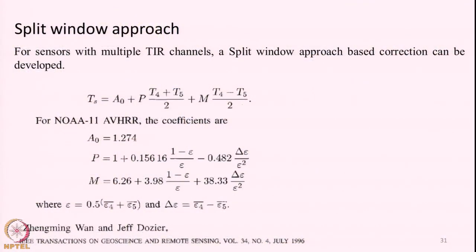This applies to sensors with one thermal channel — hence the name single channel method or radiative transfer equation approach. For sensors with two or more thermal channels — for example, Landsat 8 has two thermal channels, band 10 and band 11 — and sensors like MODIS with two thermal channels, we can resort to a method known as the split window technique. In the split window method, the general assumption is what is called differential atmospheric absorption, where the two thermal channels are selected in a contiguous manner.